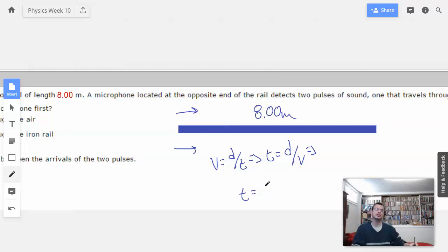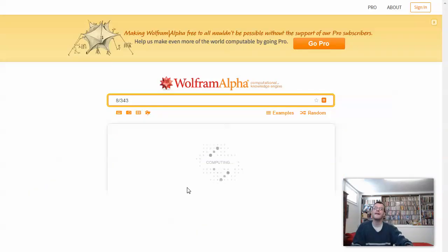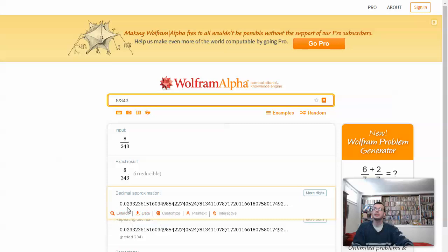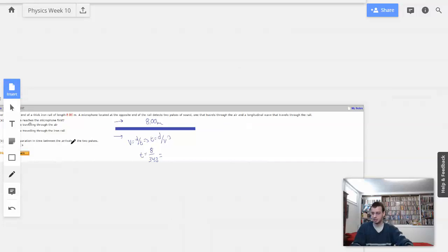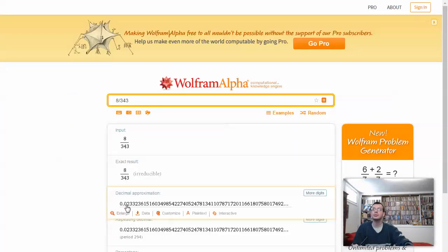Because we know this is 8.00 meters. Time equals distance, which is 8, divided by 343 meters per second. That's just something I know in life. You can probably look it up. So, 8 divided by 343. So, it's going to take 2.33 times 10 to the negative. What do they want it in? Milliseconds? Seconds. Okay.